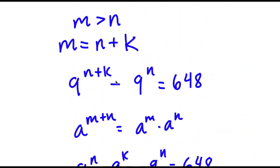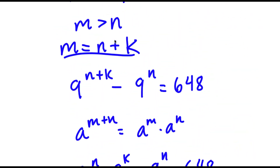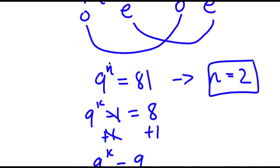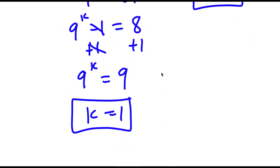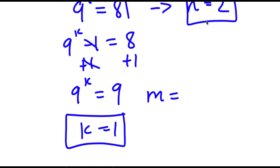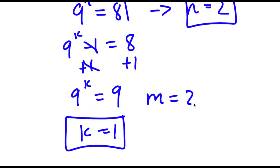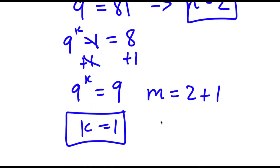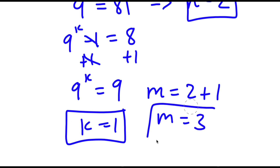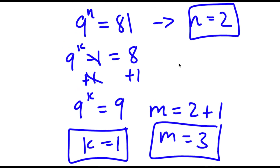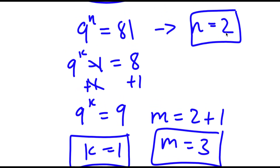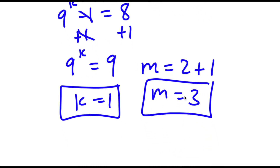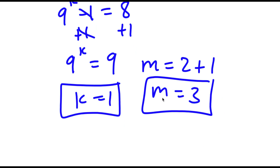Remember how we set m equal to n plus k, meaning m is equal to n, which is 2, plus k, which is 1. So m is equal to 3. Therefore n equals 2 and m equals 3 are my solutions for this equation.